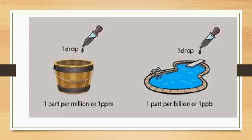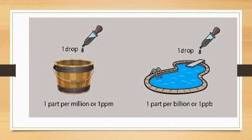Next we discuss PPM, PPB and PPT — that is parts per million, parts per billion, and parts per trillion. Parts per million means one part per million parts of solution; parts per billion means one part per billion; and parts per trillion means one part per trillion.